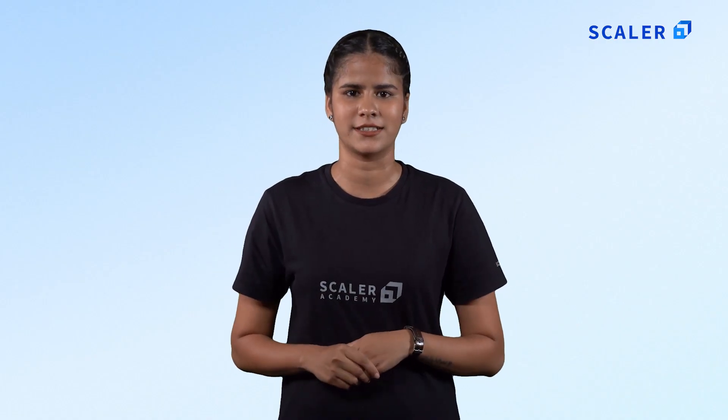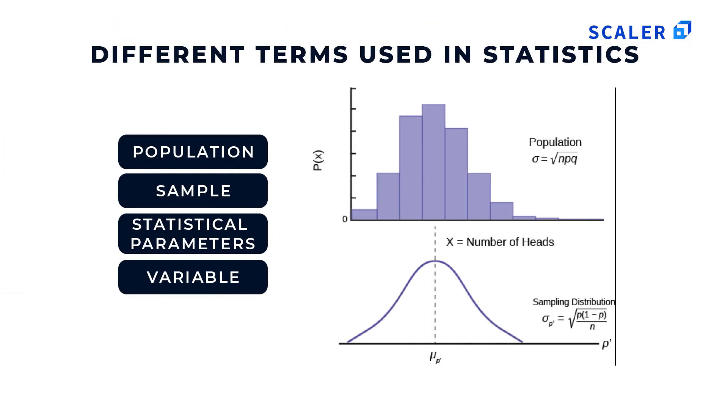Now, let us dig deep into the different concepts needed in statistical calculation. Have you heard of the Central Limit Theorem? It is a theorem that is based on statistics. It explains that the sample will be distributed normally if you have found the standard deviation and mean of a population or sample. Learn about the different terms used in statistics. When referring to statistics, some often-used terminologies are population, sample, statistical parameter, and variable.